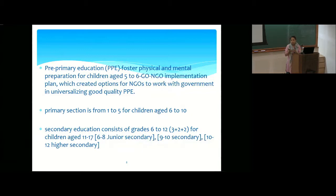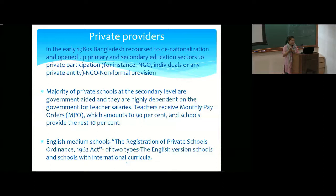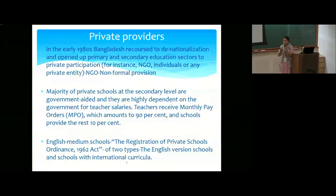In the early 1980s, Bangladesh moved again toward denationalization and opened primary and secondary education to private institutions. NGO schools provide non-formal provisions specifically. The majority of private schools at the secondary level are government-aided and highly dependent on the government for teacher salaries. English medium schools, which existed even during the Pakistani regime, still follow the Registration of Private Schools Ordinance of 1962 — an act from when Bangladesh was still East Pakistan.